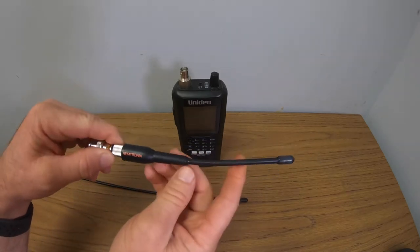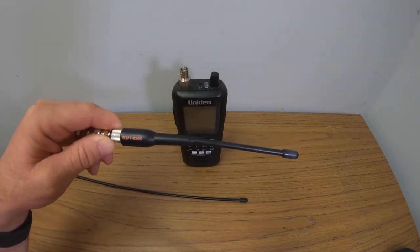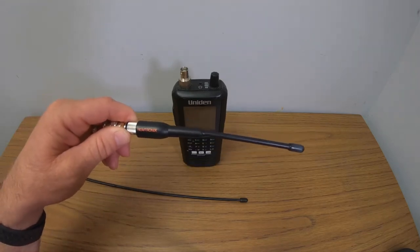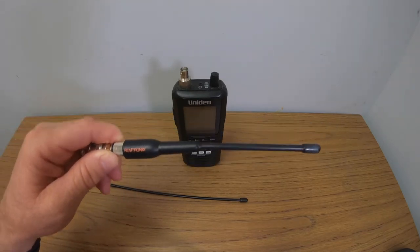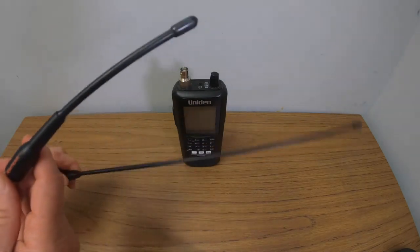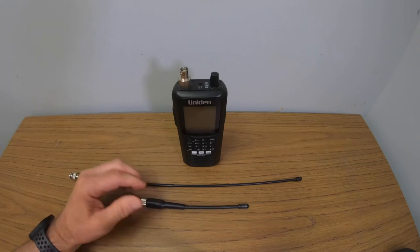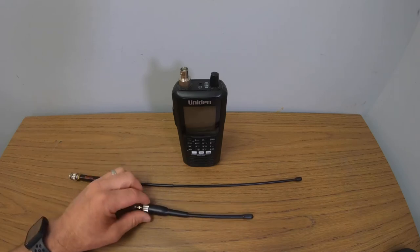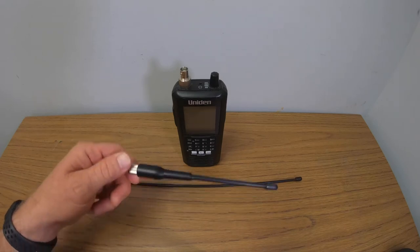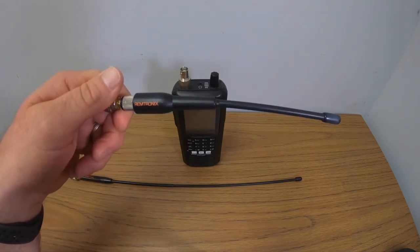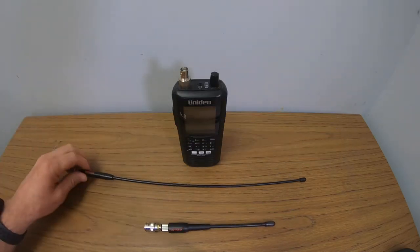But I have this one and this one works better for P25 digital type stuff versus analog. It'll pick up analog, but it works better for digital, especially compared to the diamond. Now there's thousands of antennas out there. You can do your research and figure out which one works best for you. But I know this is a very popular one. The Rimtronics is much better than the one that comes with it. The rubber ducky, they call it.